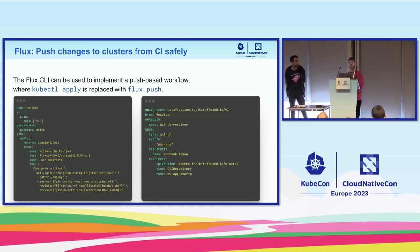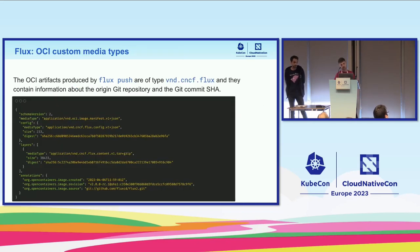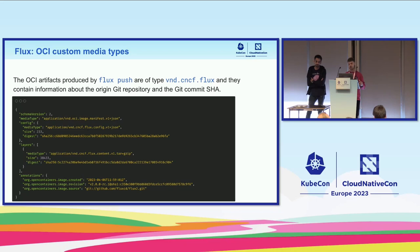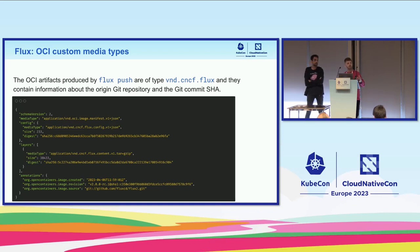If the notification controller happens to be down and doesn't see the event, it will eventually be picked up because of the interval that's still being set. When we push the artifact, we create a revision reference and a source reference. These are pushed into the image, and you can see from which commit the OCI image originates. This is also used in Flux Trace — Flux Trace looks for that information and displays it, so if you're dealing with an OCI repository and want to see where the change actually happened, you can still see the reference to the Git repository.